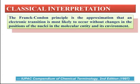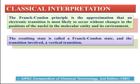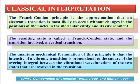The Franck-Condon Principle says that an electronic transition takes place without change in the nuclear position. The resulting state is called a Franck-Condon state and the transition involved is a vertical transition. The quantum mechanical formulation of this principle is that the intensity of a vibronic transition is proportional to the square of the overlap integral between the vibrational wave functions of the two states involved in the transition.